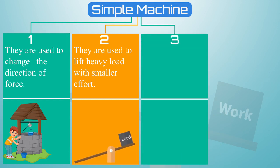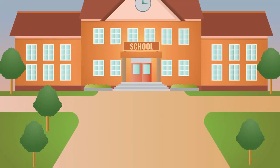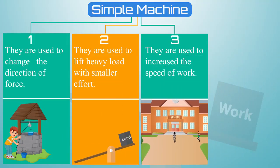Number three, they are used to increase the speed of work. My friends, when you come to school by walking, it consumes longer time but when you use simple machines like bicycle, it consumes shorter time. This defines the simple machines are used to increase speed of work.